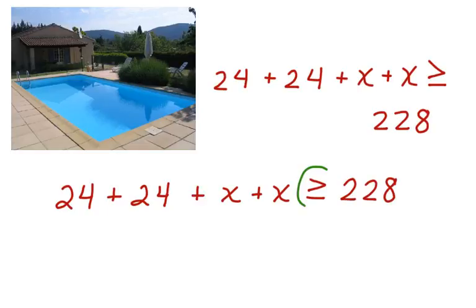We used greater than or equal to because we want the perimeter of the pool to be at least 228 feet. So that means it could be 228 feet or more.